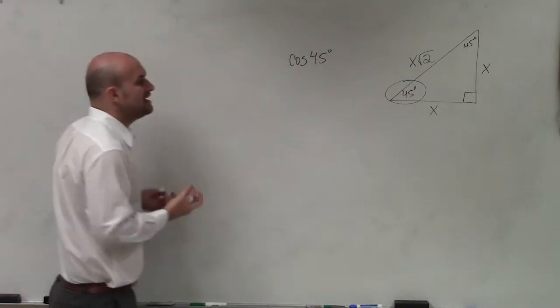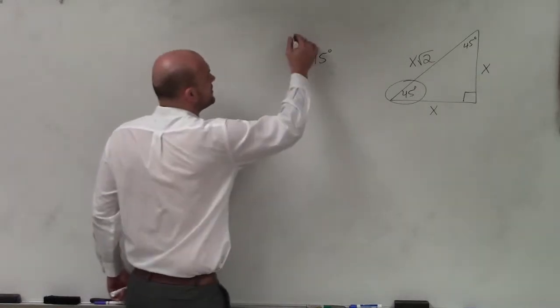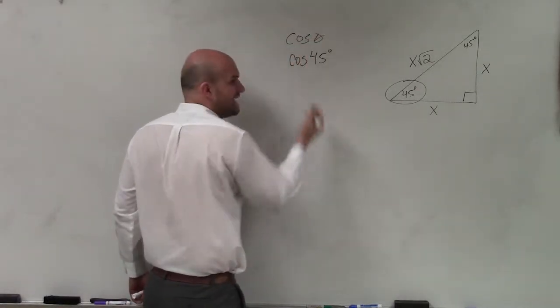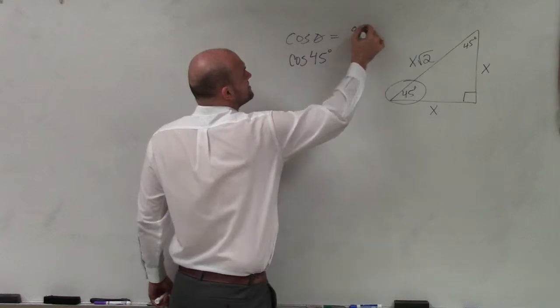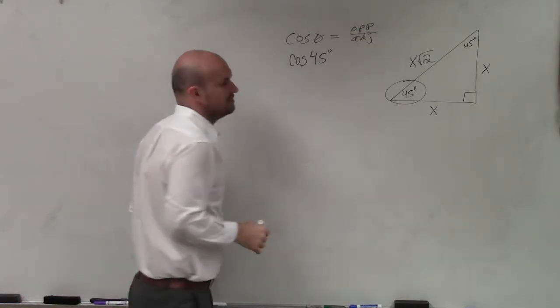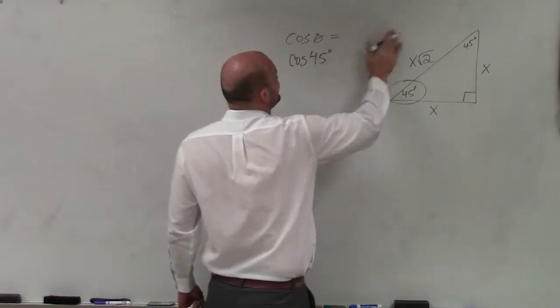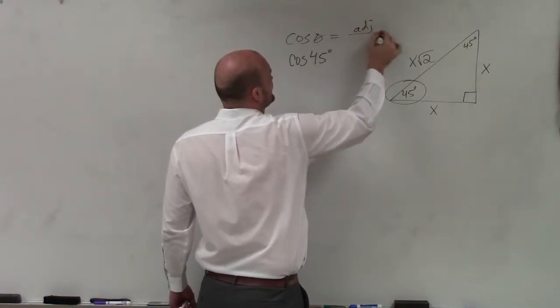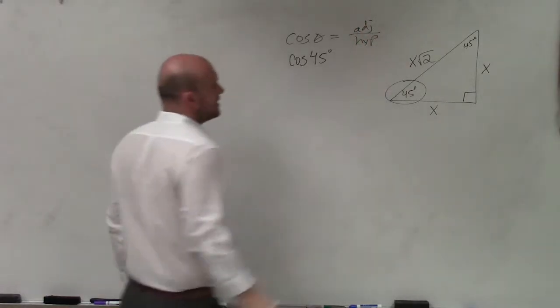So it says find the cosine of 45 degrees. Well, remember, the cosine of any angle, ladies and gentlemen, is opposite over adjacent. That is not it. It's adjacent over hypotenuse.